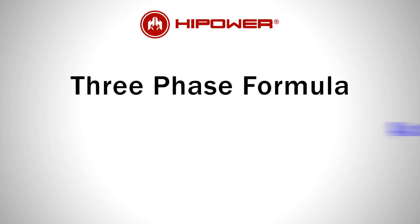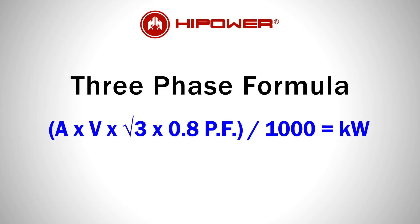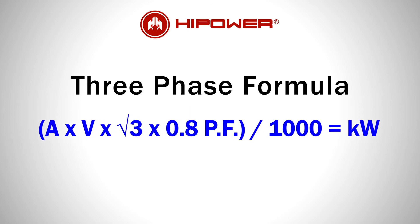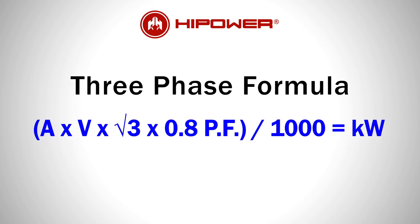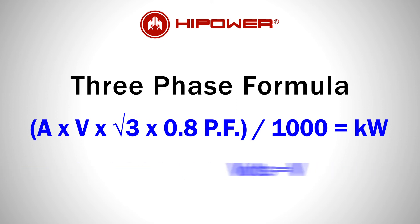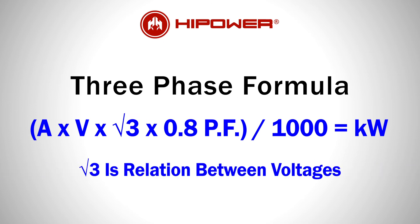The second formula to note is for three-phase generators. For three phase, the kilowatts is a function of amps and the different voltage outputs of a three-phase generator. Again, amps equals A, V equals volts, but now we use root 3 — the relation between the two voltages within a three-phase generator.